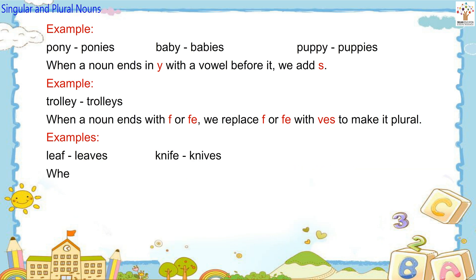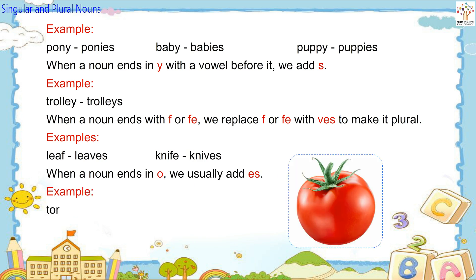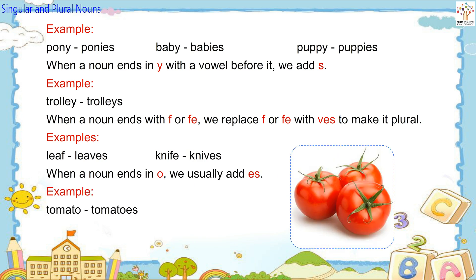When a noun ends in O, we usually add ES. Example: Tomato — Tomatoes.